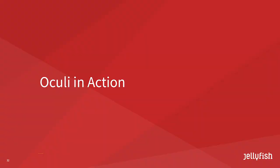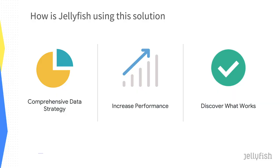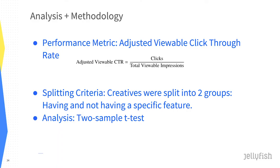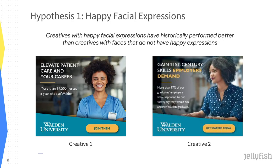Hey everybody, I'm James, a data scientist at Jellyfish — we're the Chemical X piece. One of the first things to address is how we're using this solution. It primarily augments our comprehensive data strategy by informing our data-driven creative analysis approach, and it helps us increase performance for our clients. As Cory mentioned, creatives account for a significant percentage of performance, so even being a little bit better at it can offer a significant performance lift. When Google approached us about this partnership, we wanted to figure out if there was meaningful and significant data coming out of the Vision API. We set up a series of tests using adjusted viewable click-through rate as our performance metric — essentially clicks over total viewable impressions — split our creatives into two groups having and not having a specific feature, and used a two-sample t-test for significance testing.